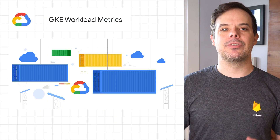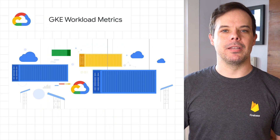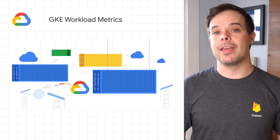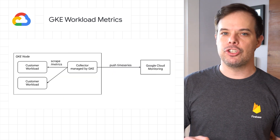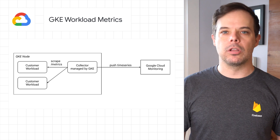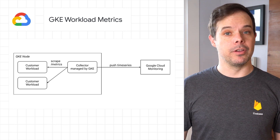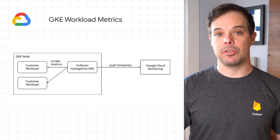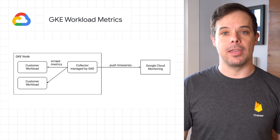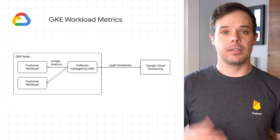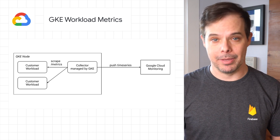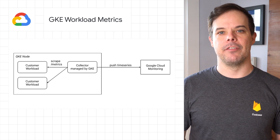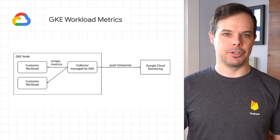We recently introduced a new capability that makes it easier than ever to monitor your Google Kubernetes Engine deployments. It's called GKE Workload Metrics. It's currently in preview, and it simplifies the collection of metrics exposed by any GKE workload, such as a cron job or a deployment, so you don't need to dedicate any time to the management of your metrics collection pipeline.